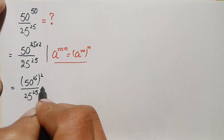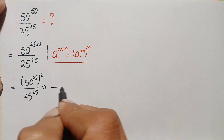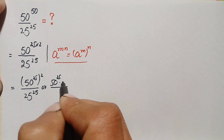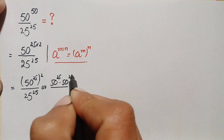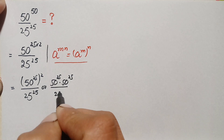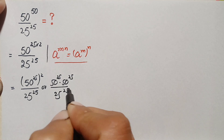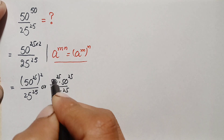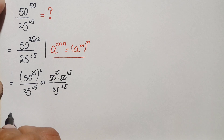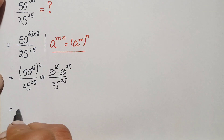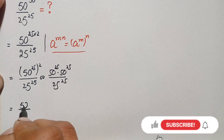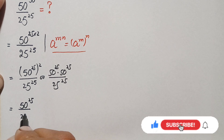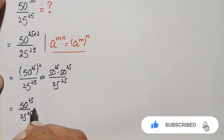There is a square over this number, so we can write it two times: 50 raised to power 25, times 50 raised to power 25, divided by 25 raised to power 25. These two numbers in the numerator and denominator share the same power, so we separate them. This becomes 50 raised to power 25 divided by 25 raised to power 25, times 50 raised to power 25.